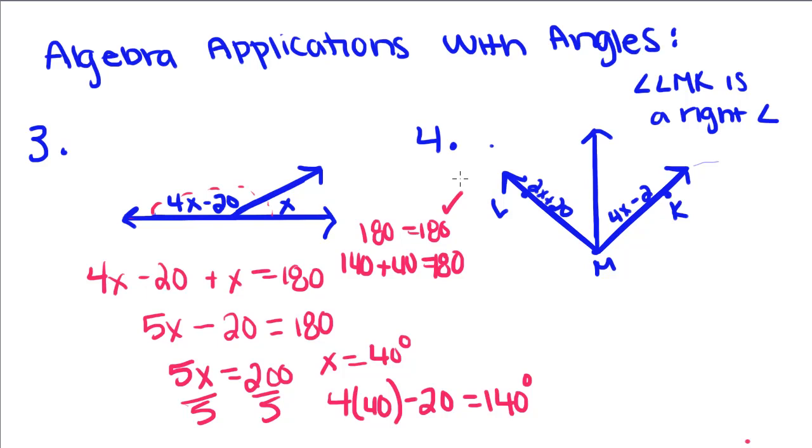We have one more problem we're going to do today. We're told that angle LMK is a right angle. This big angle right here is a right angle. Since a right angle has a measure of 90 degrees, we know that this big angle has to equal 90 degrees. That means the sum of each one of these little angles has to equal 90 degrees. 2x plus 20, we're going to add these two equations together and set it equal to 90 degrees. 2x plus 4x is 6x. 20 minus 2 is 18, equals 90 degrees.